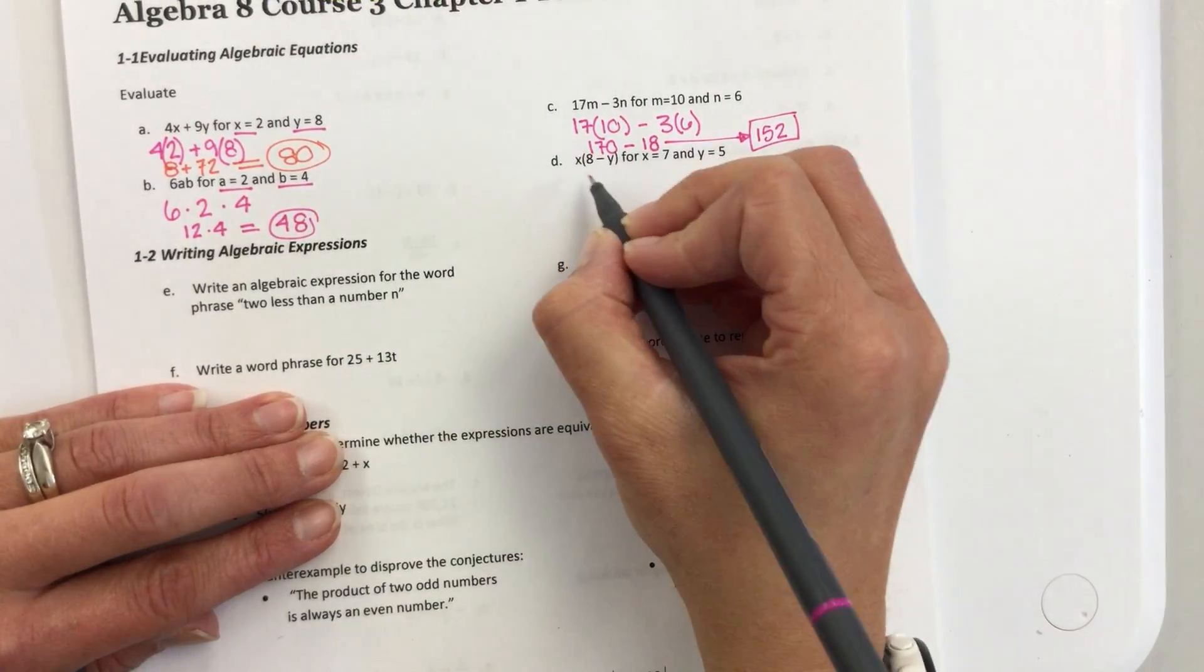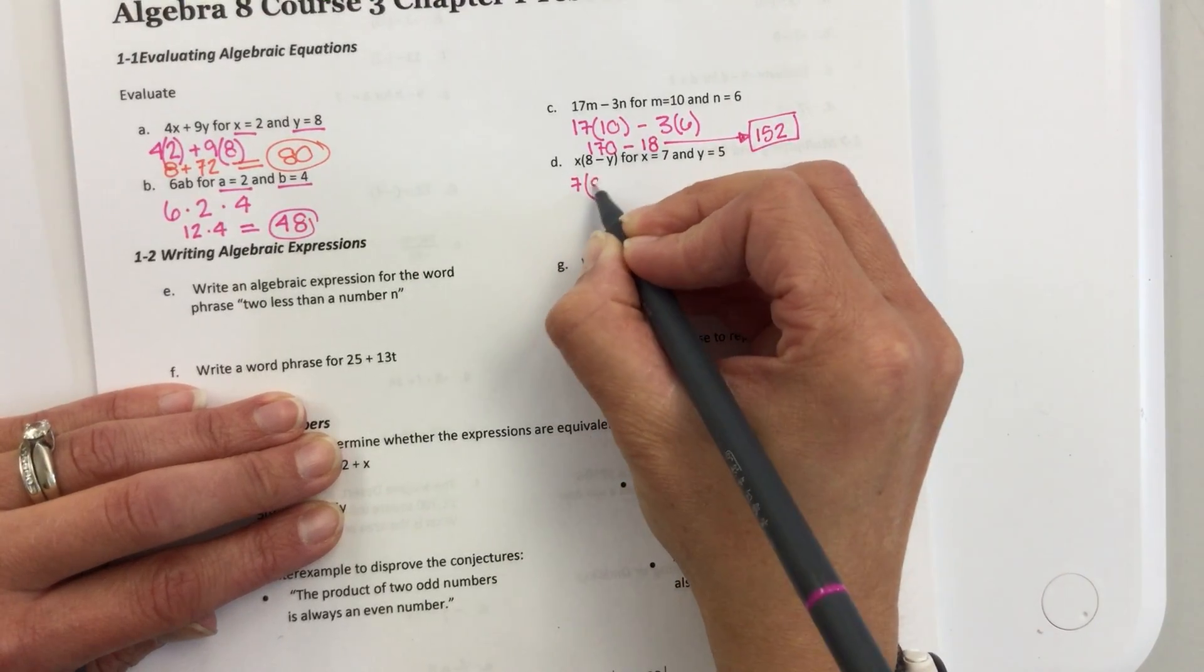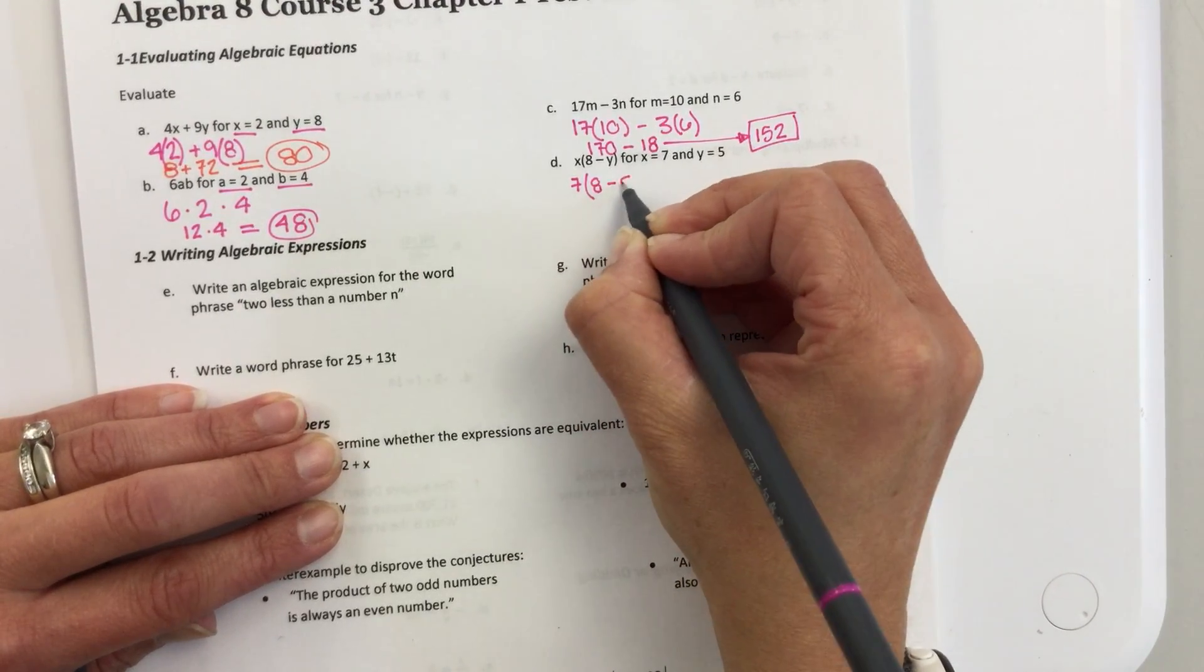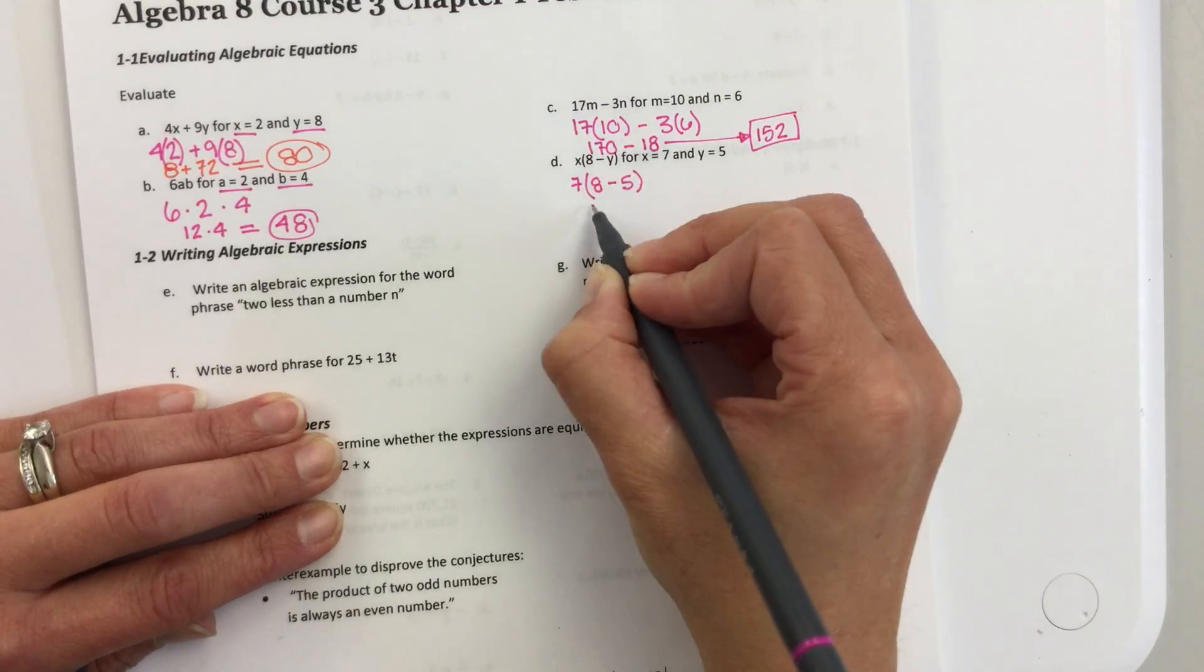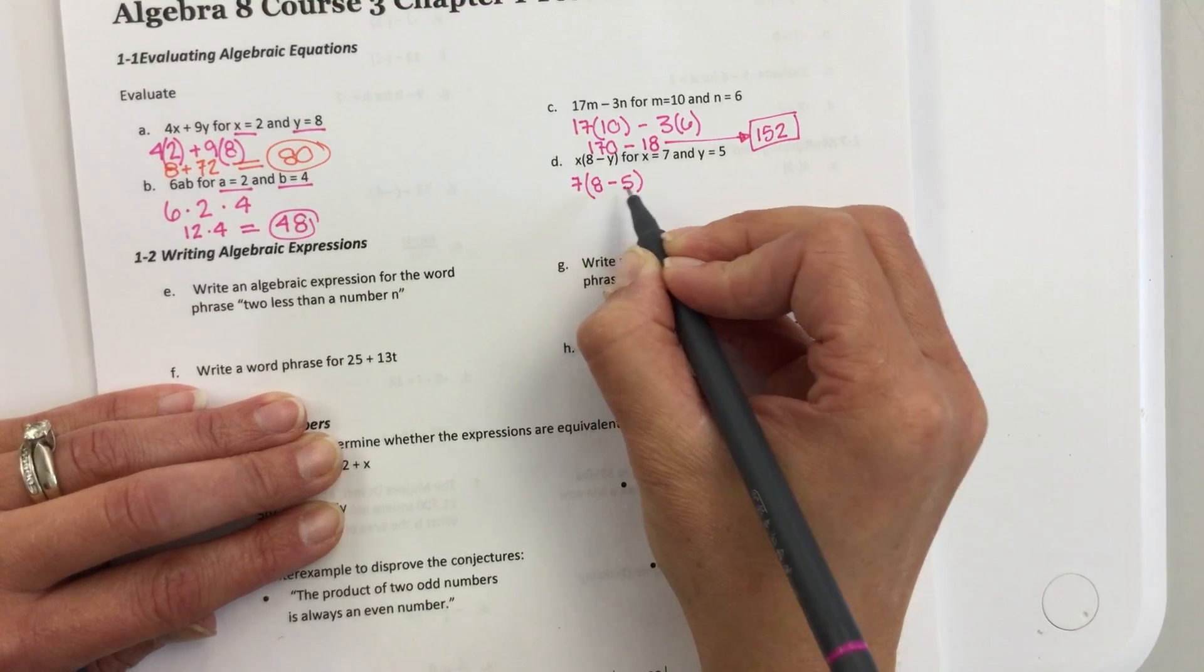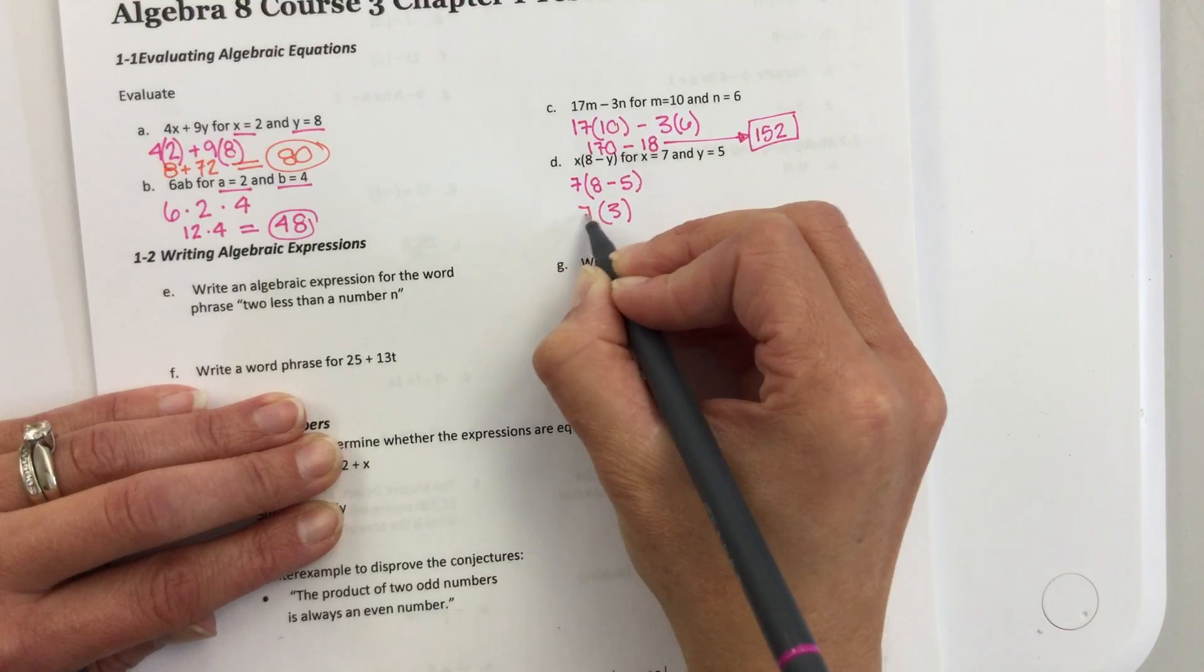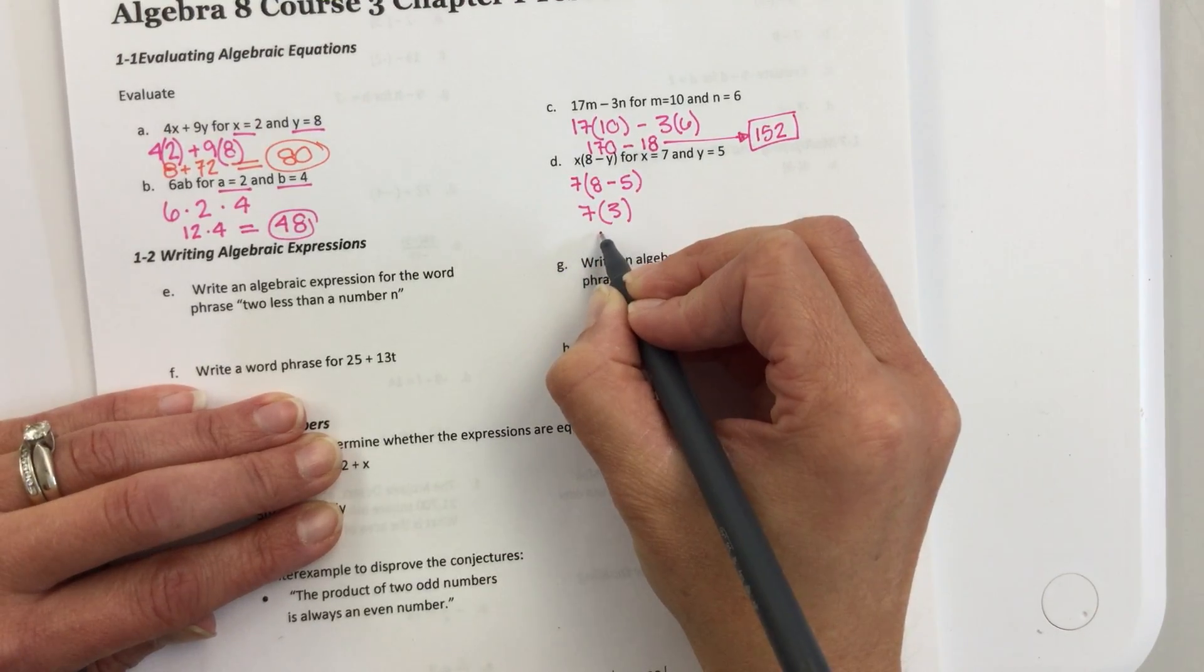Okay, next one here. I need to put a 7 in for the x. 5 in for the y. I can do what's in the parentheses first. So, 8 minus 5 is 3. 7 times 3 is 21.